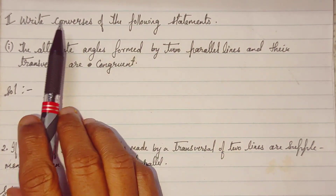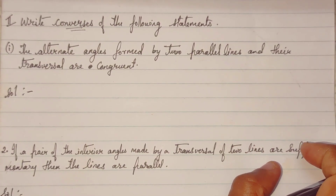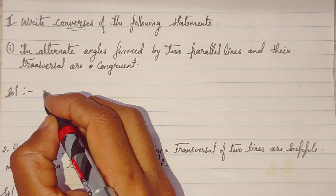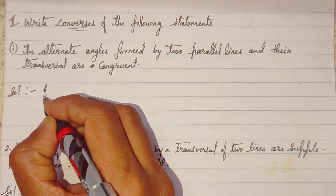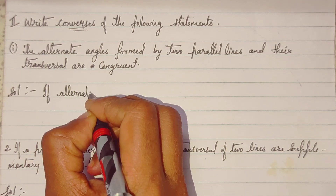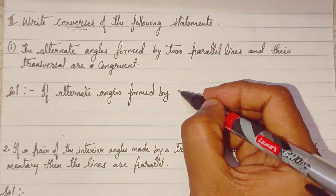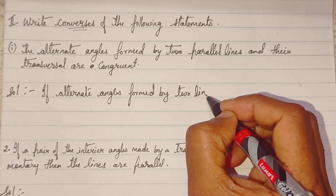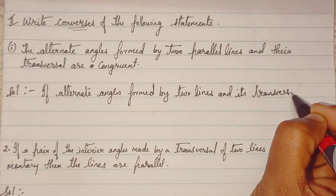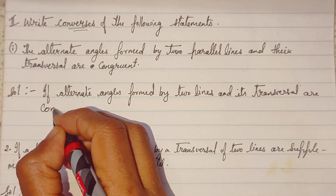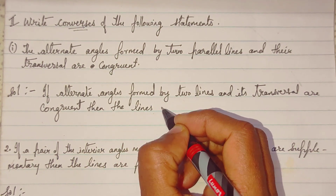Second heading: Write the converse of the following statements. Converse means the reverse. First: 'The alternate angles formed by two parallel lines and a transversal are congruent.' The converse will be: if the alternate angles formed by two lines and their transversal are congruent, then the lines are parallel.